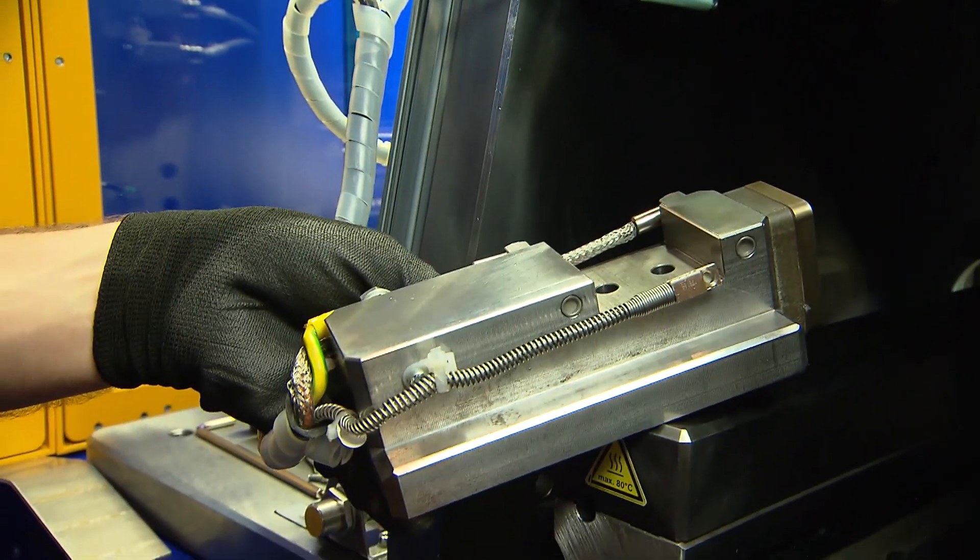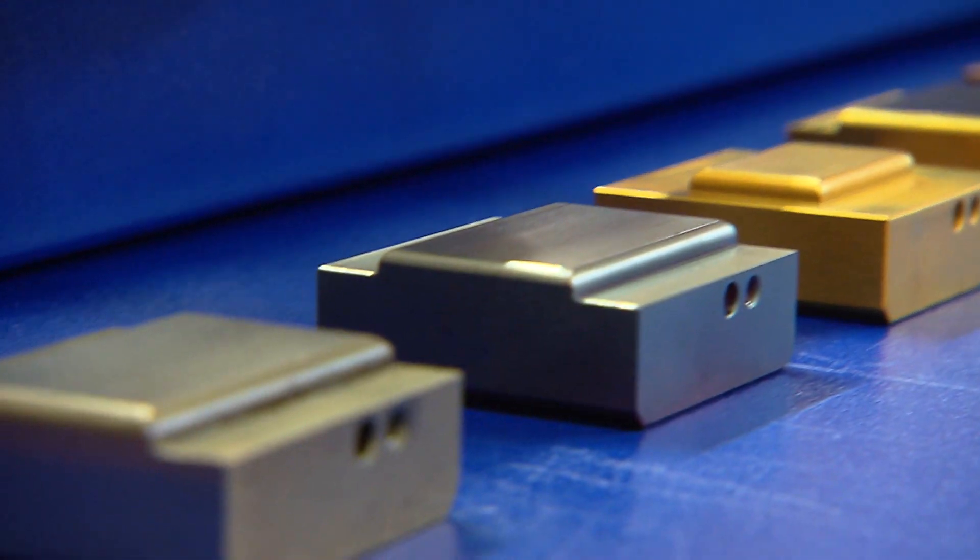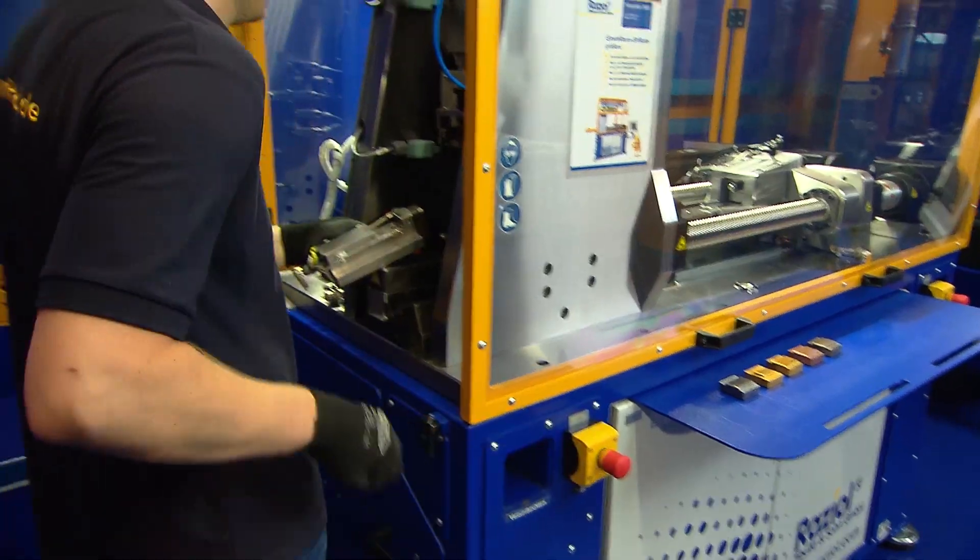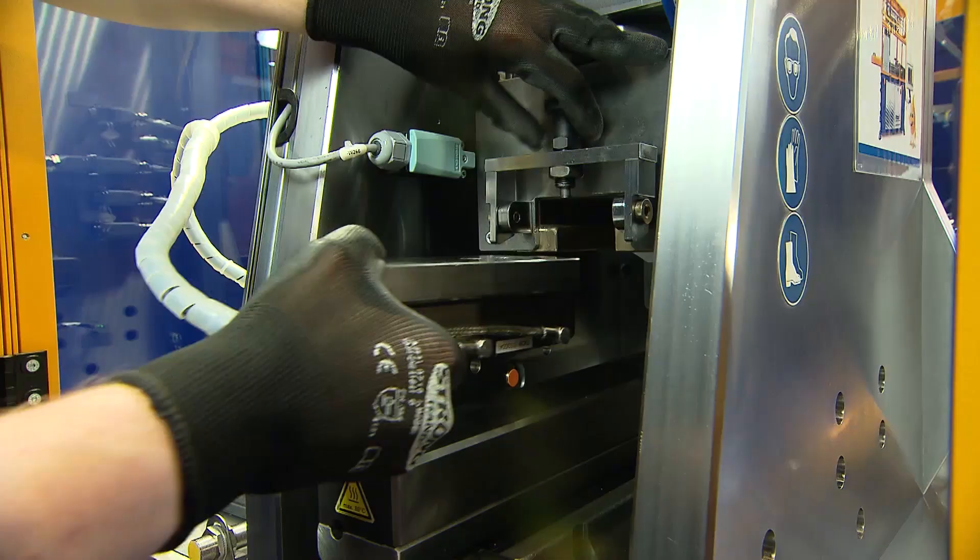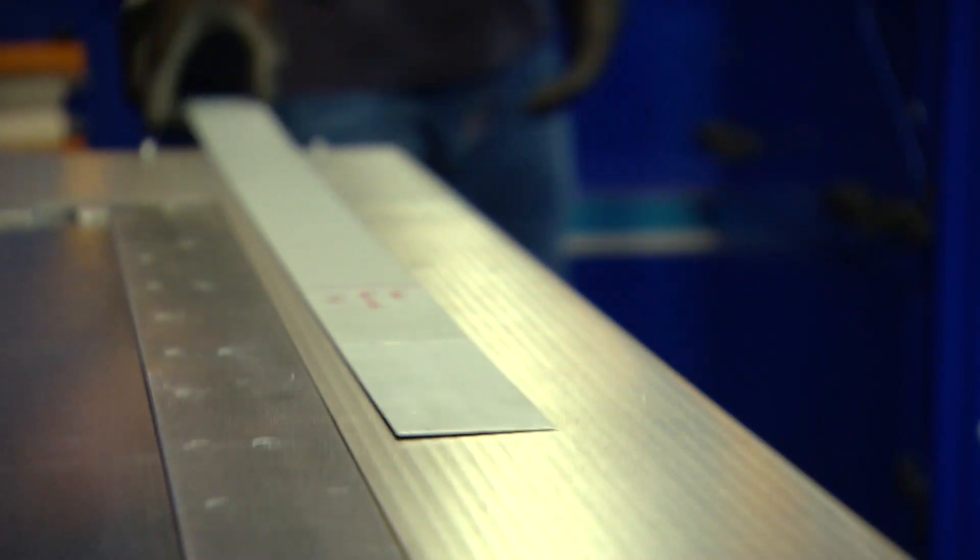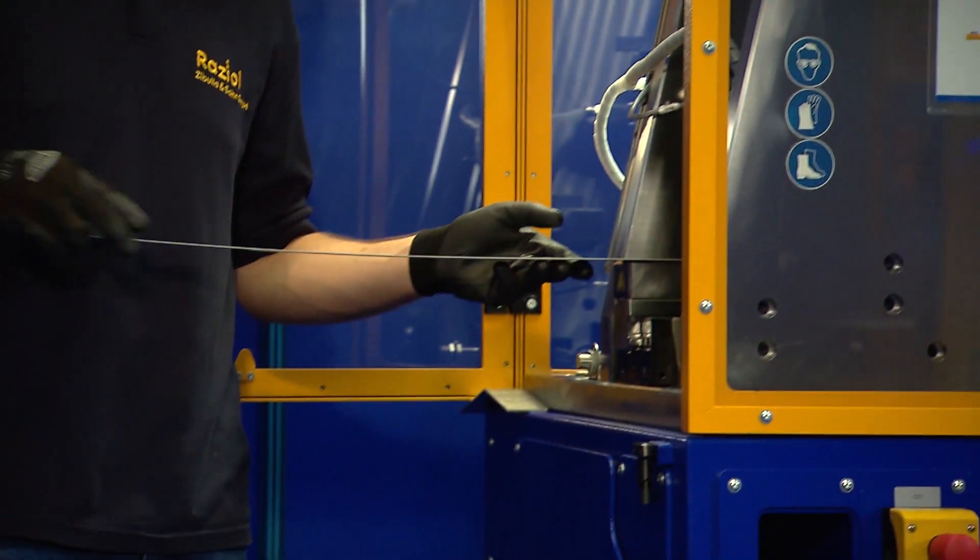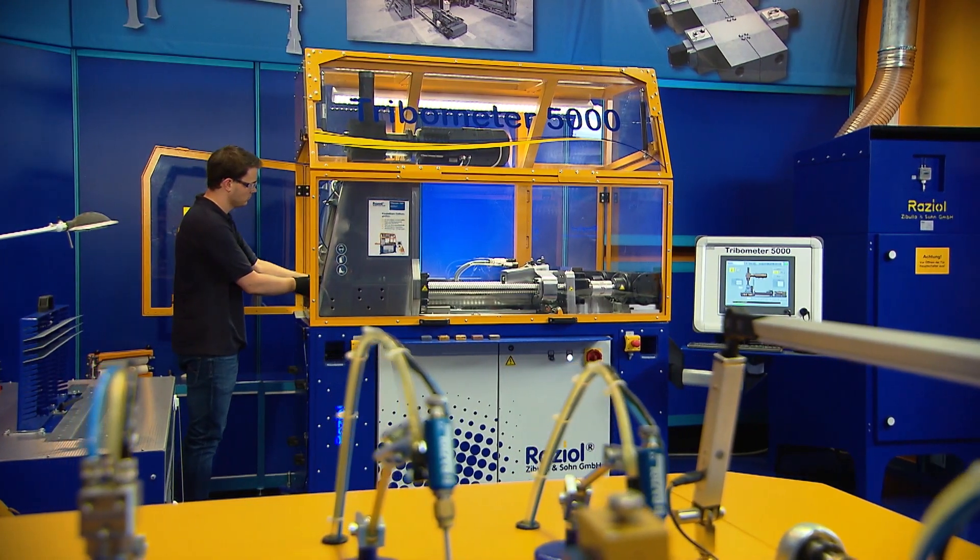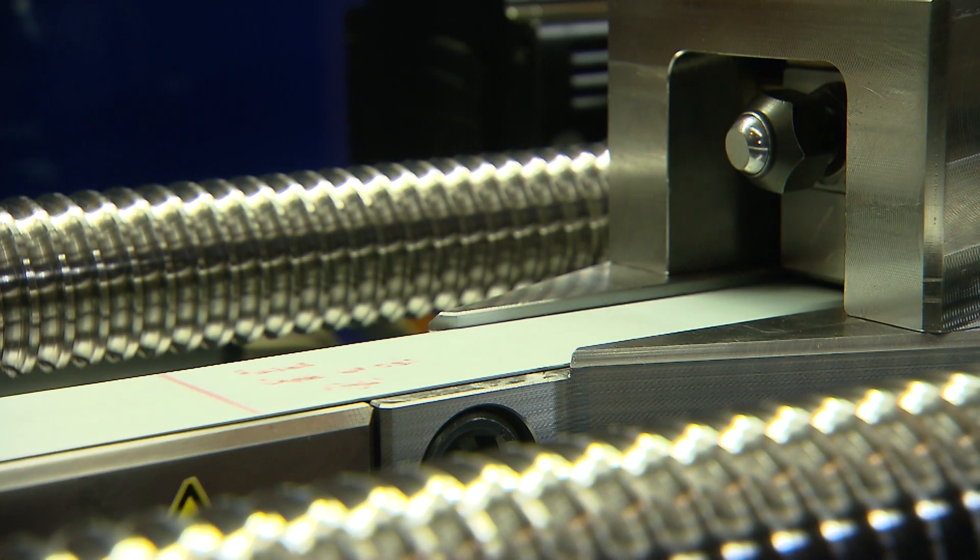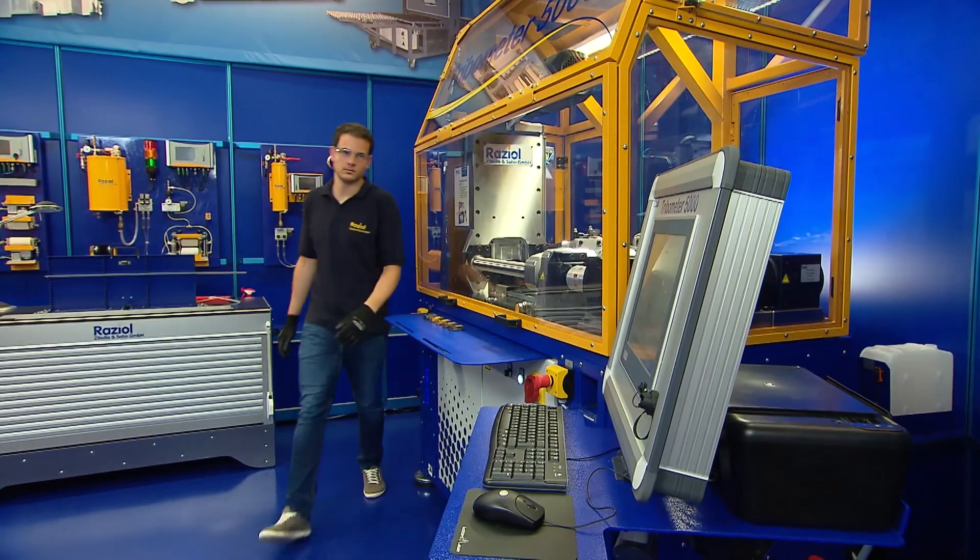A number of friction tests are necessary using testing machines such as the Tribometer 5000. First, the friction tool is mounted into the machine, then a lubricated strip of sheet material. Then the friction test is performed.